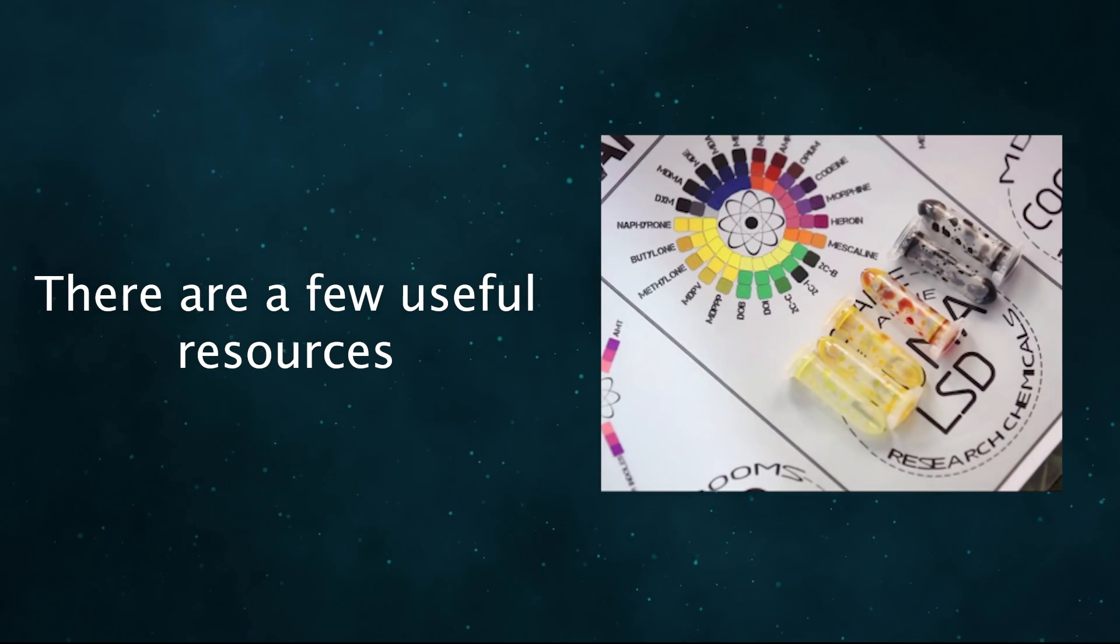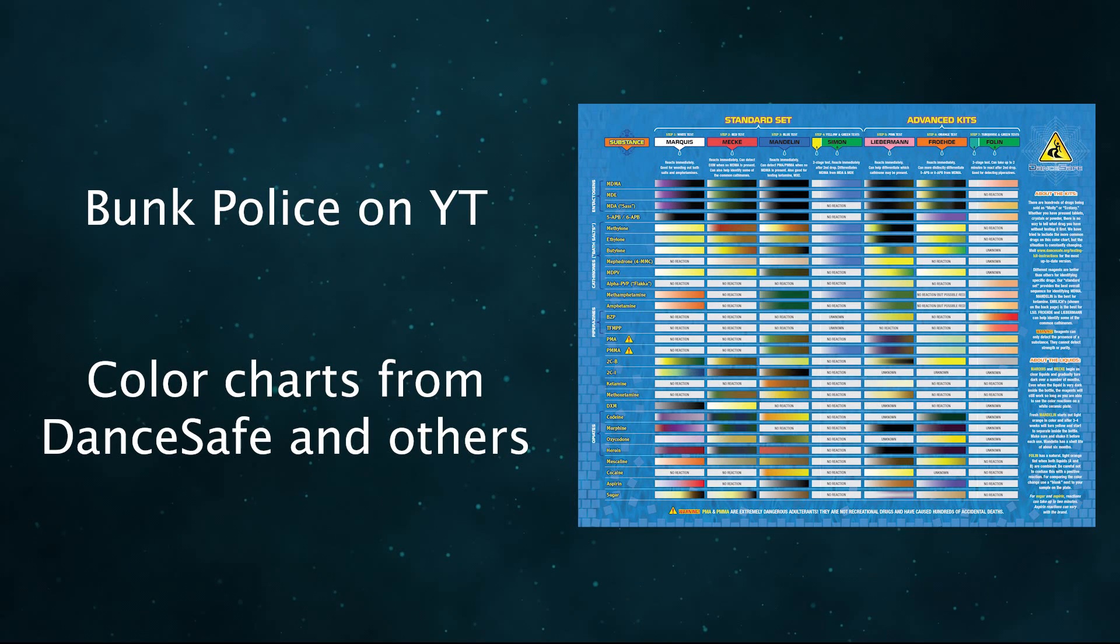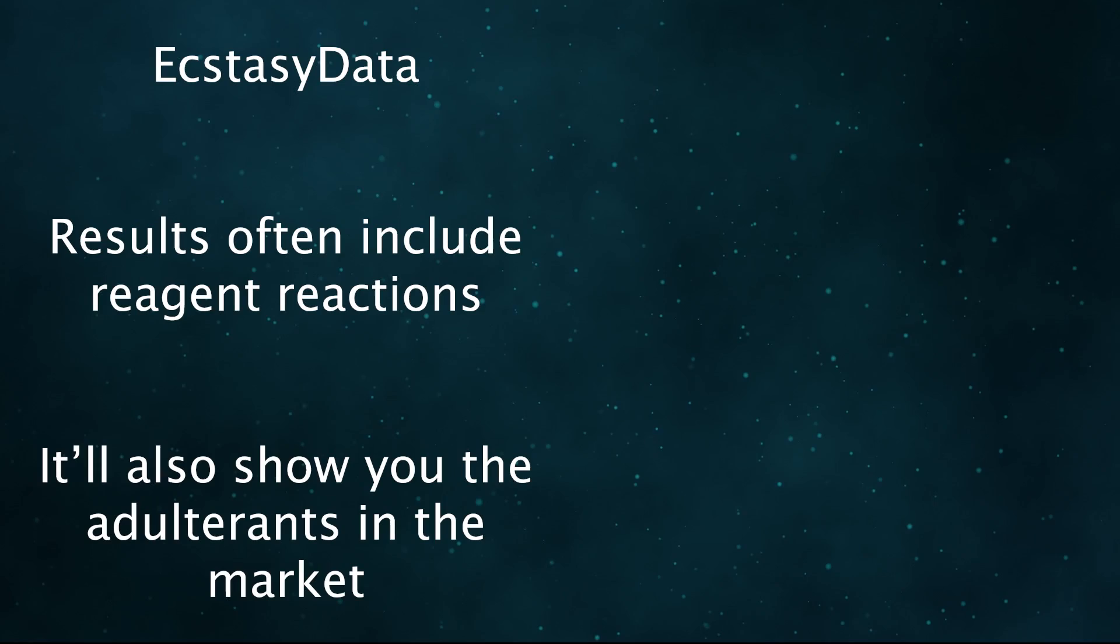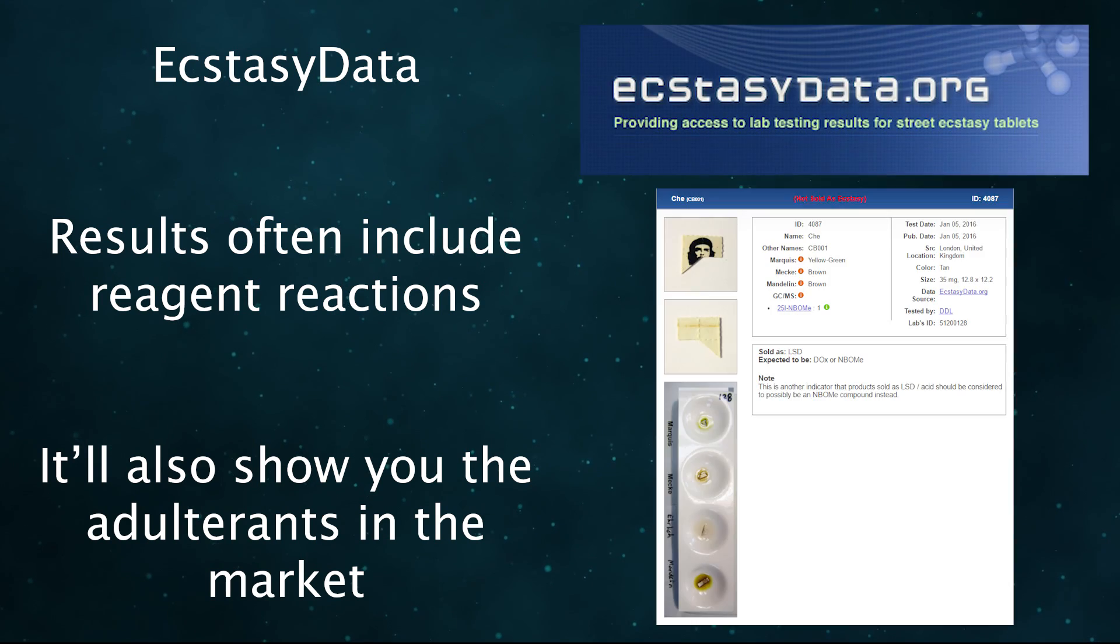To figure out how your drug sample should react, there are a few resources you can turn to. The Bunk Police YouTube channel shows the results for a wide variety of substances. Another good option is using color charts from DanceSafe and others. You can also visit Ecstasy Data, which is associated with Erowid. Their drug listings often include reagent results.